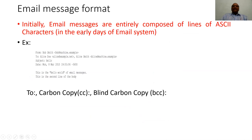Initially, email messages were composed of ASCII characters, and an example email contains the header as well as the message body. The header section contains the recipient address, followed by two other attributes: carbon copy (CC) and blind carbon copy (BCC), which allow sending emails to multiple recipients. The difference between CC and BCC is that with BCC, the recipient addresses are hidden — they are not known to the other recipients.